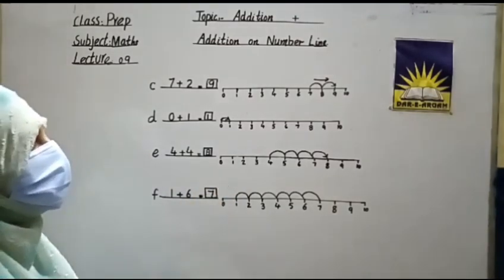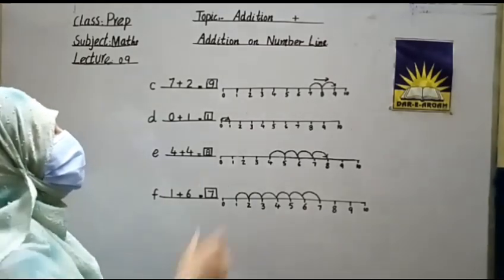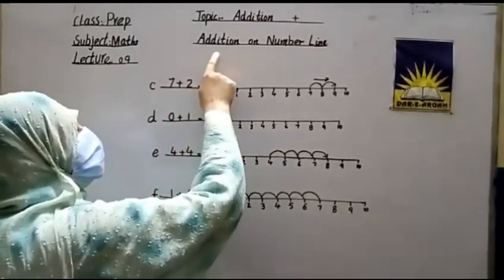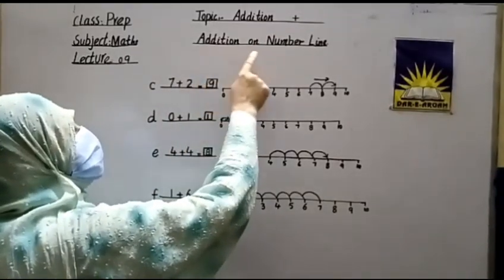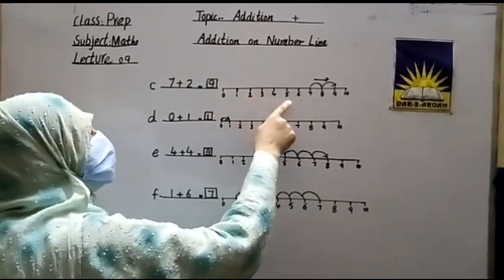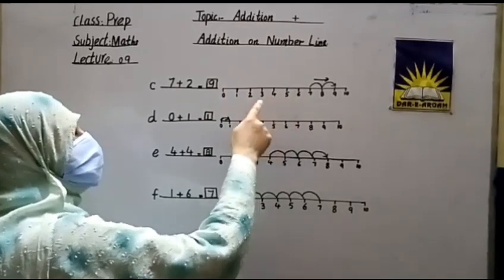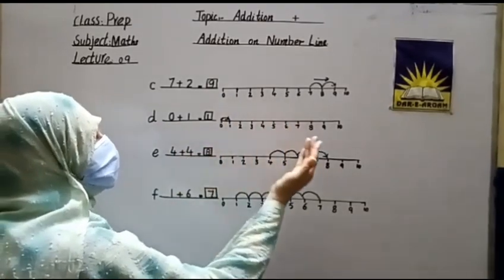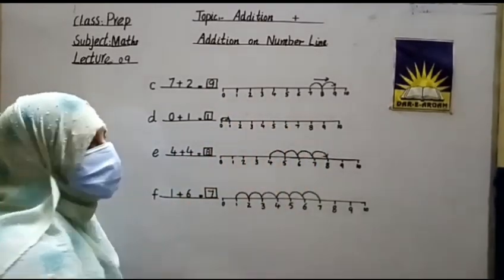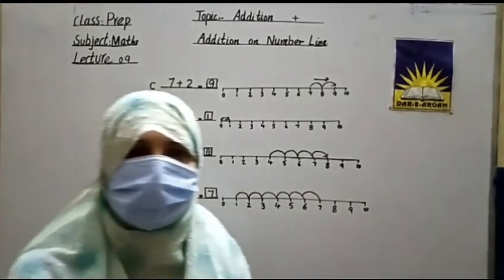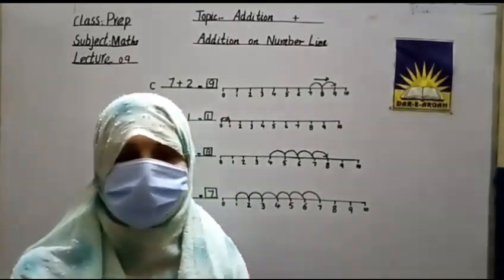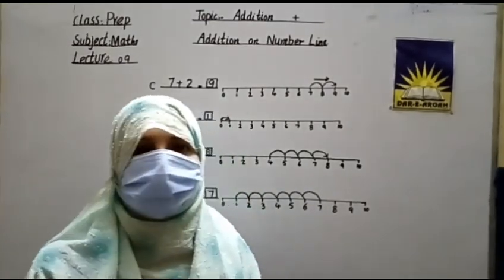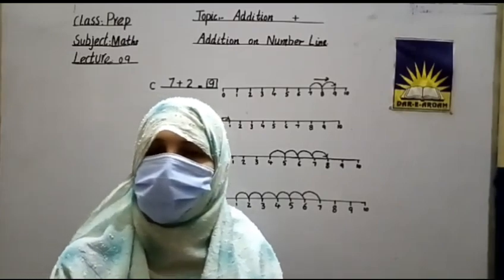Okay, I repeat it. Our topic is Addition. The sign of addition is plus. We do addition questions by using the number line. When we use the number line, we go left to right to solve the questions. I hope you learned it very well. The remaining questions are on book page number 27 — all students do them by yourselves. Take care of yourself.